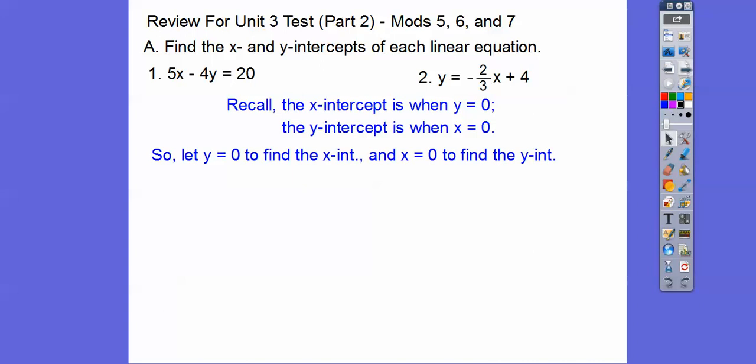So let's go ahead and do that for number 1 right here. The x-intercept, again, is when y equals 0. So if we just let y be 0, then this 4y goes away, or this 4 times 0 goes away, and 5 goes into 20 how many times?